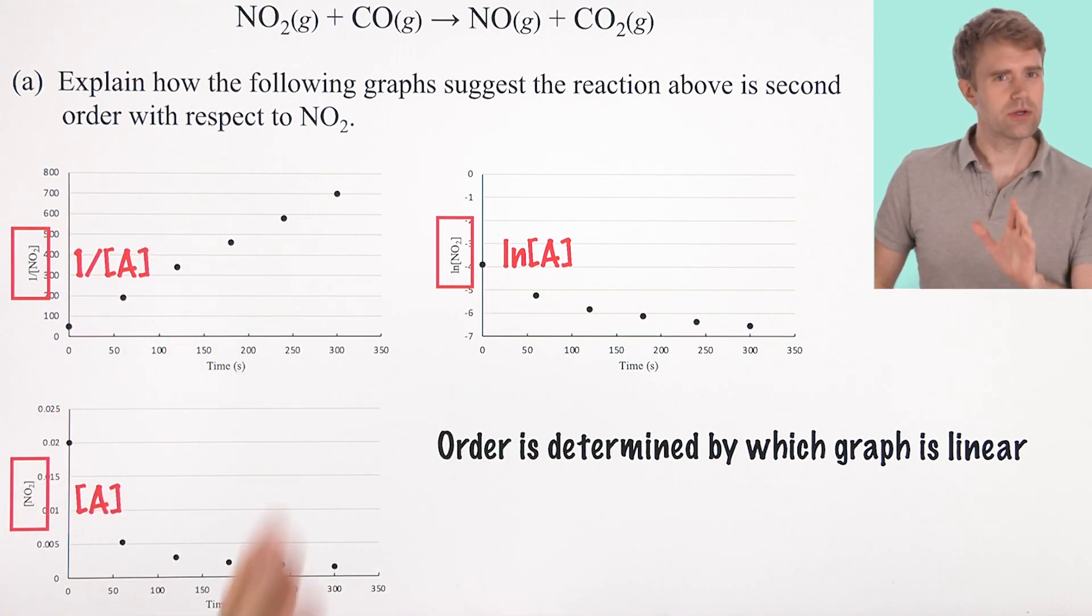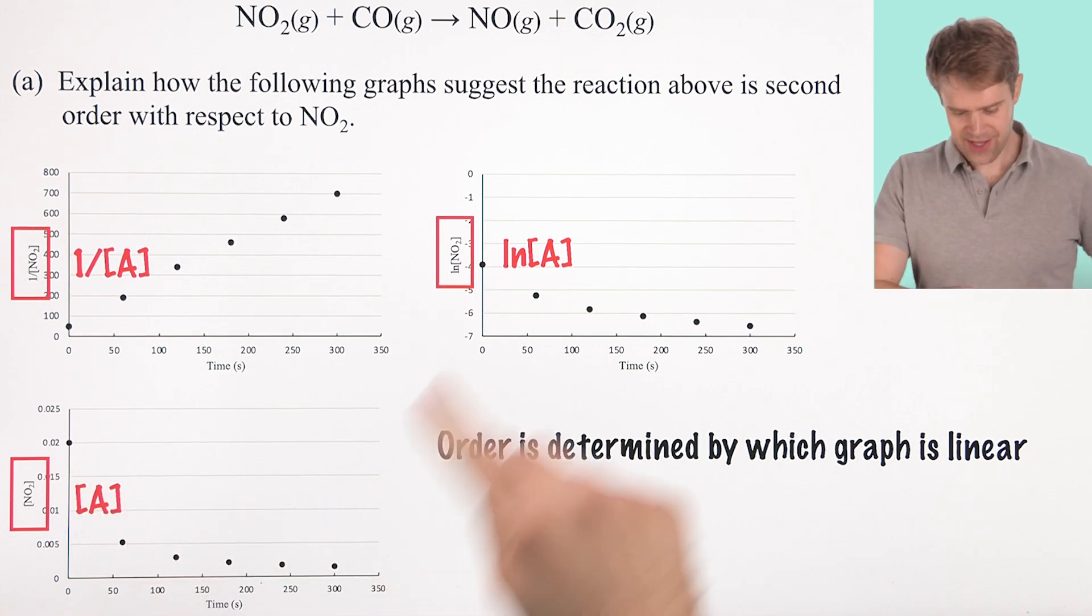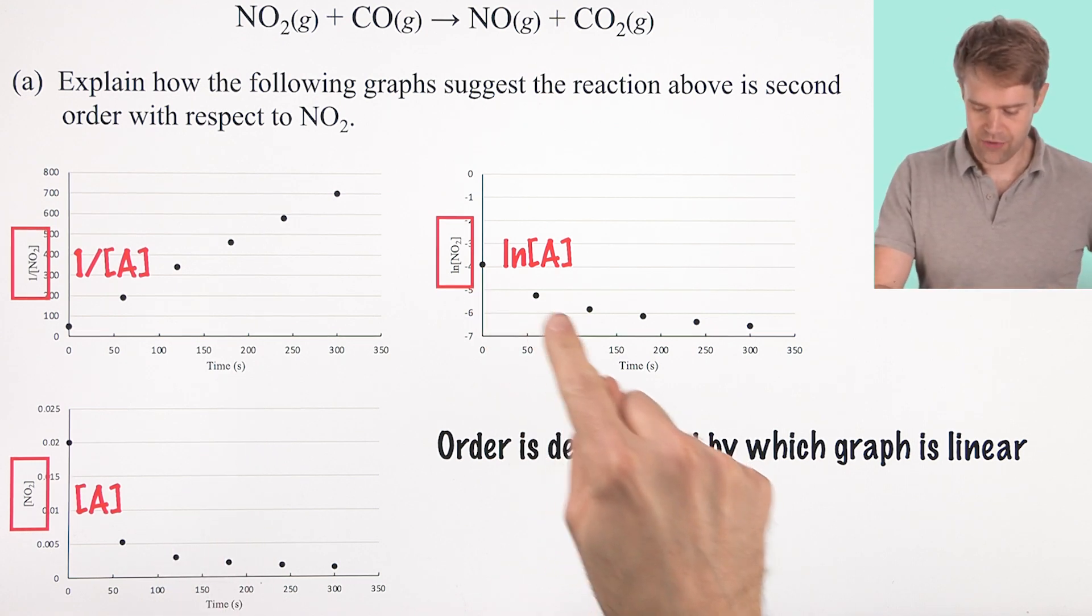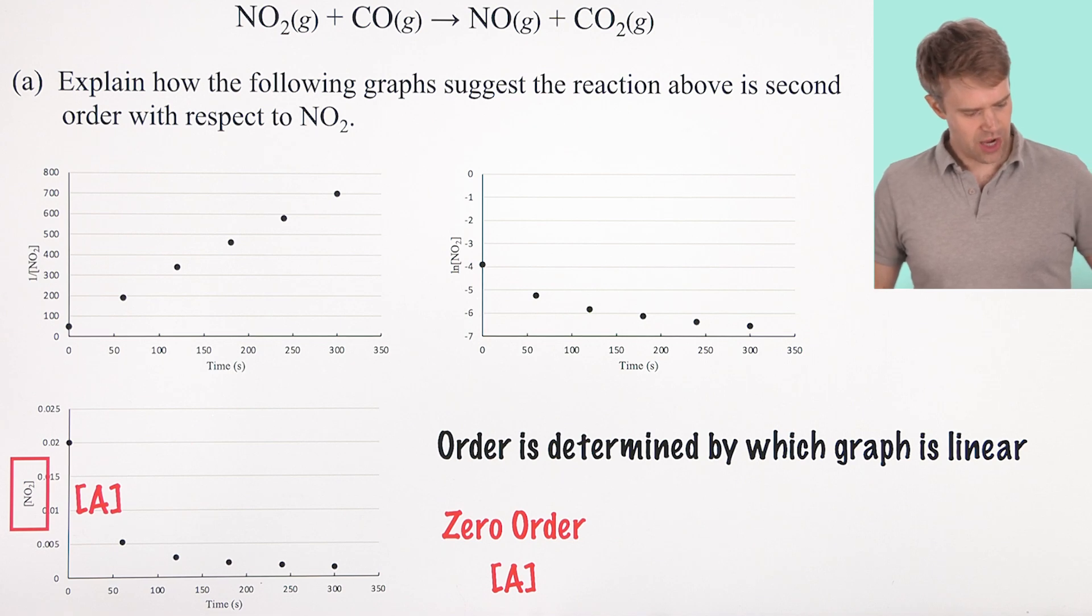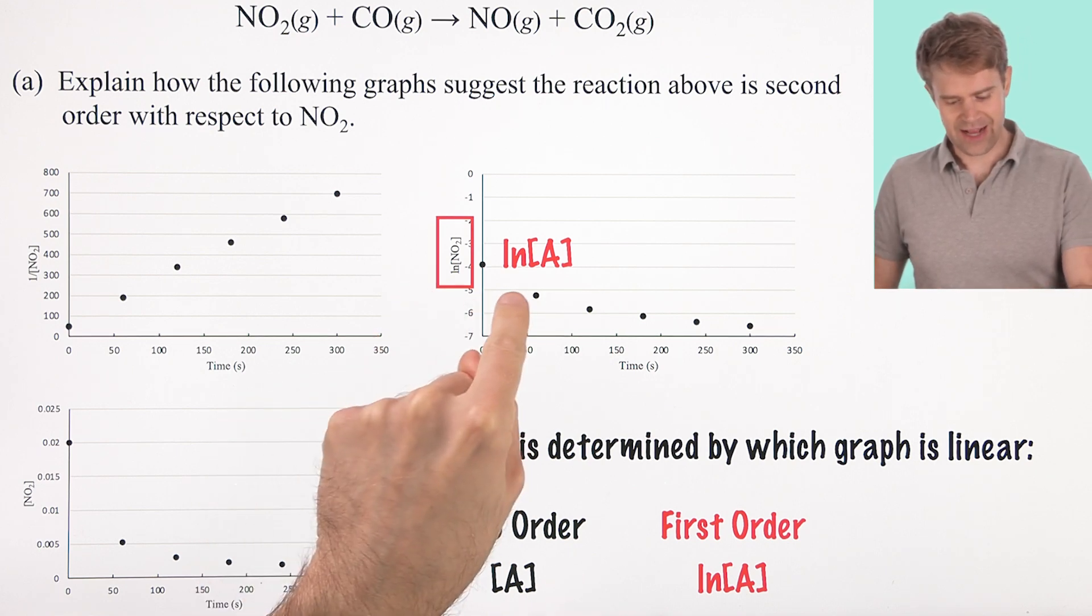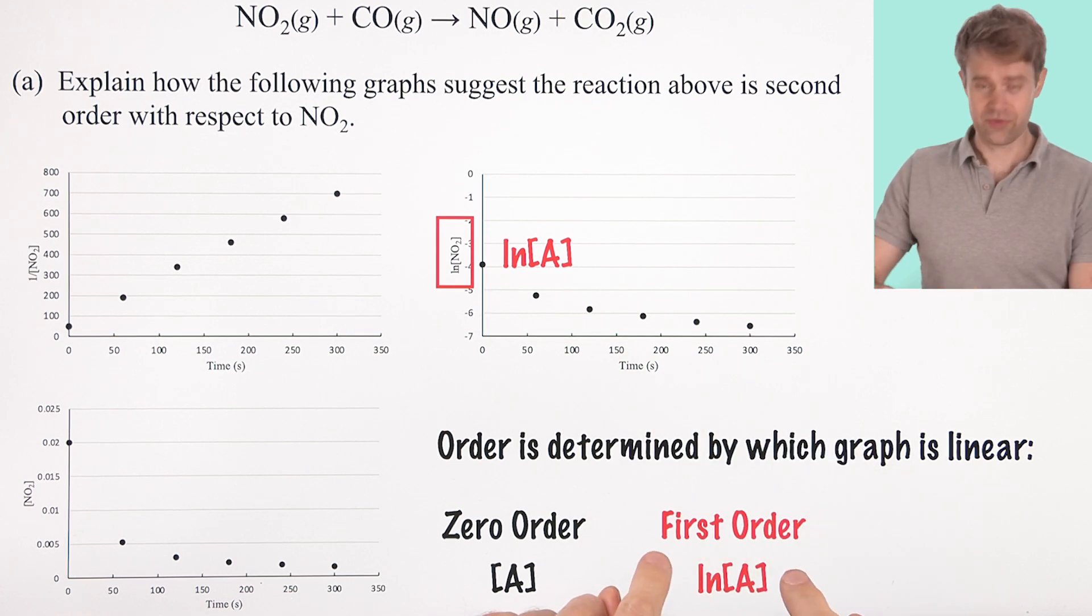Now, here's the thing. Only one of these graphs is going to be linear. And the reaction order is determined by which graph has a linear fit of the points that have been plotted. If the concentration of the A graph is linear, the reaction is zero order.